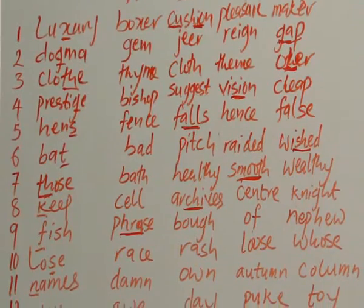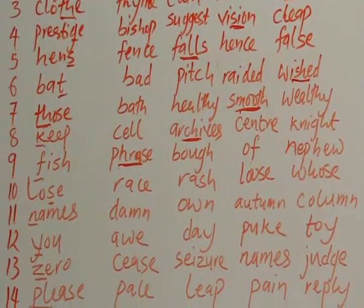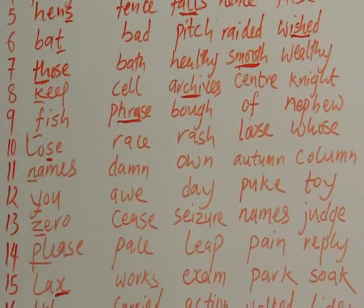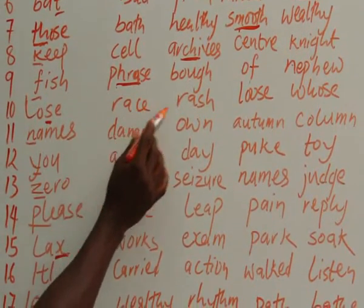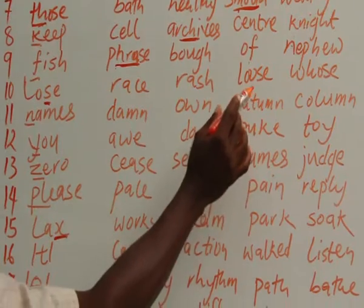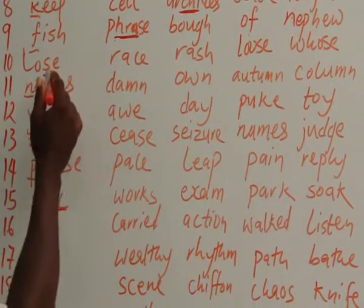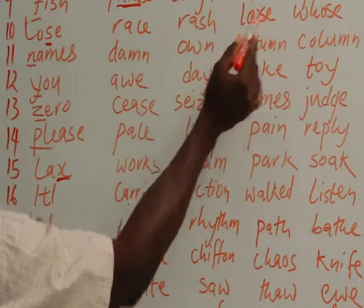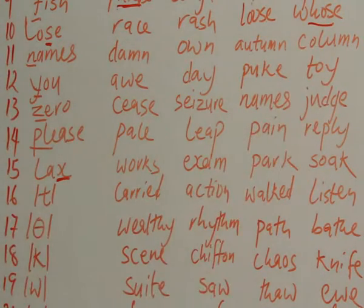So number ten. What is our word? In number ten, we have 'lose.' Have you picked your answer? In this word, you have the Z sound. So that automatically removes 'race,' because it doesn't have Z. 'Rashes' out. 'Loose' — this word looks a bit like 'lose' but it's actually 'loose.' So when you have Z here, our answer therefore is 'whose.'